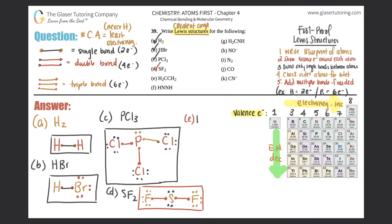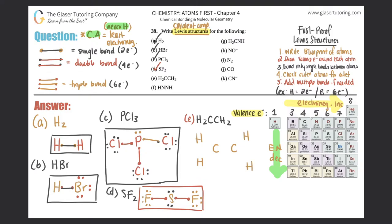Part e, H₂C=CH₂: these are getting more complex. Hydrogen can never be the central atom, so the two carbons are in the middle. The formula shows two hydrogens bound to one carbon, which is bound to the other carbon, which has two hydrogens. Write the blueprint symmetrically from left to right: two hydrogens on the left carbon, then the carbon-carbon bond, then two hydrogens on the right carbon.